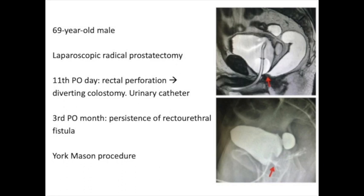We report a case of a 69-year-old patient with a laparoscopic radical prostatectomy due to prostate cancer. He is re-operated on the 11th postoperative day due to a rectal perforation. A diverting colostomy is performed and a urinary catheter is placed. On the 3rd postoperative month, a retrograde cystography and magnetic resonance imaging confirm the persistence of a rectorethral fistula.